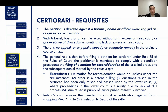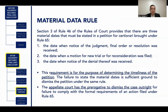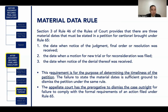Rule 65 also requires the petitioner to submit a certification against forum shopping. Under the material data rule (Section 3, Rule 46), three material dates must be stated in a petition for certiorari: (1) the date when notice of the judgment, final order, or resolution was received; (2) the date when a motion for new trial or reconsideration was filed; and (3) the date when notice of the denial thereof was received. The purpose of the material data rule is to determine the timeliness of the petition, and failure to state the material dates is sufficient ground to dismiss the petition. The appellate court has the prerogative to dismiss the case outright for failure to comply with the formal requirements of an action filed under Rule 65.